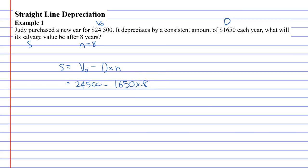What are we going to get? $24,500 minus $1,650 times eight is $11,300.